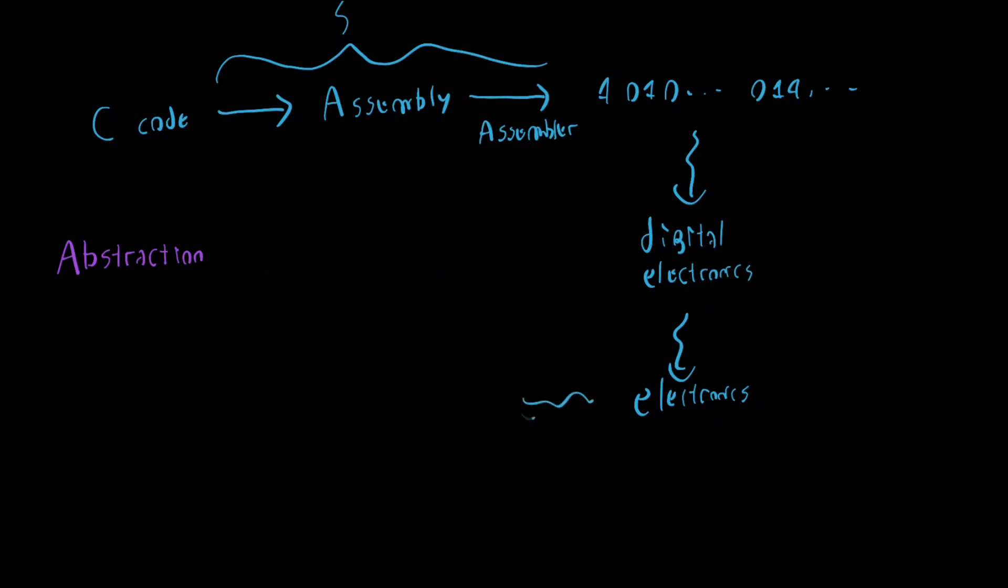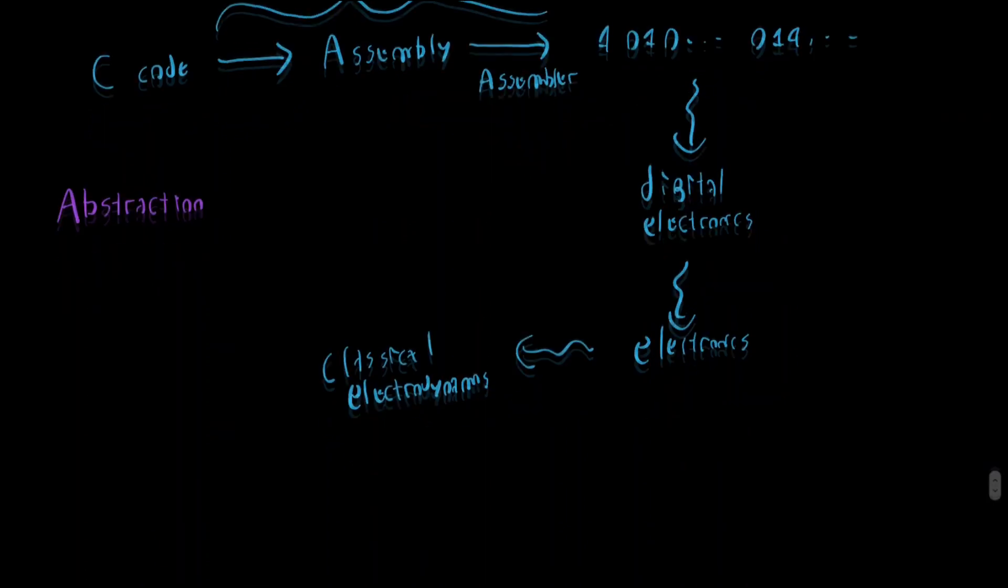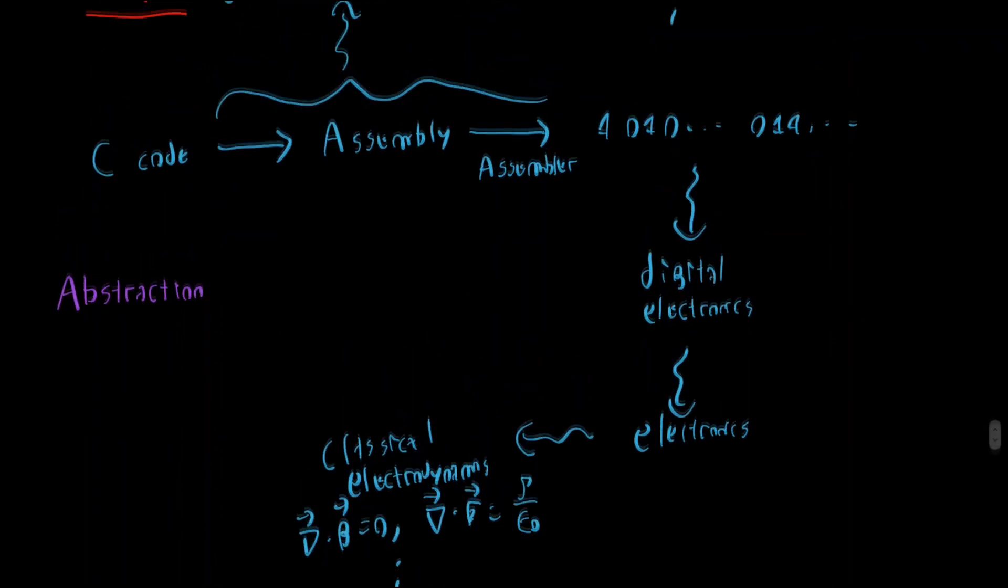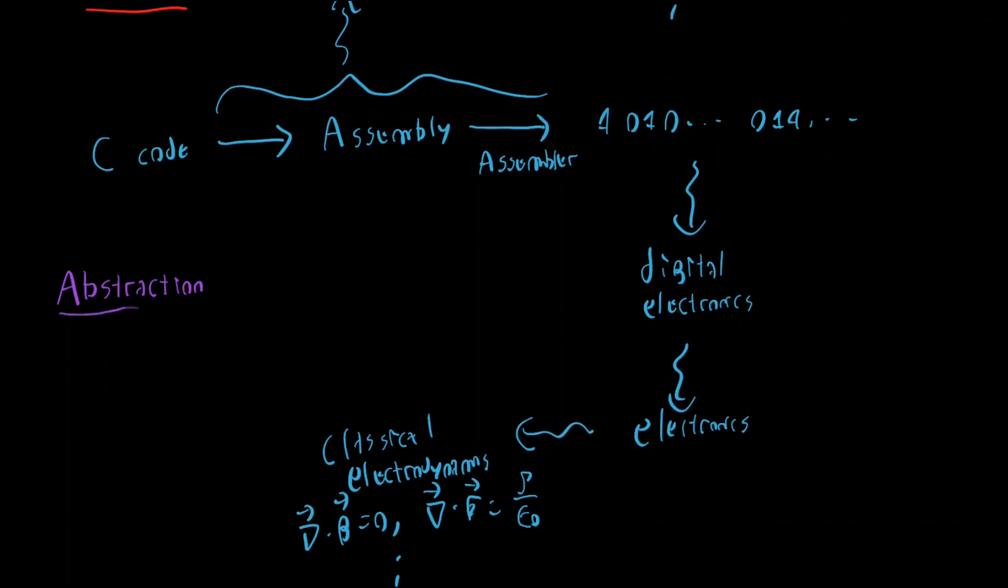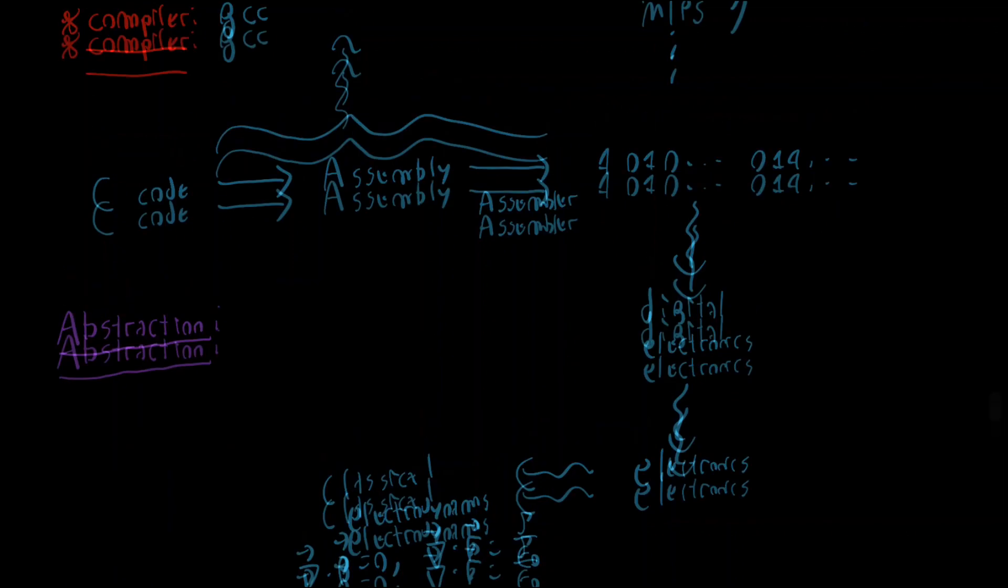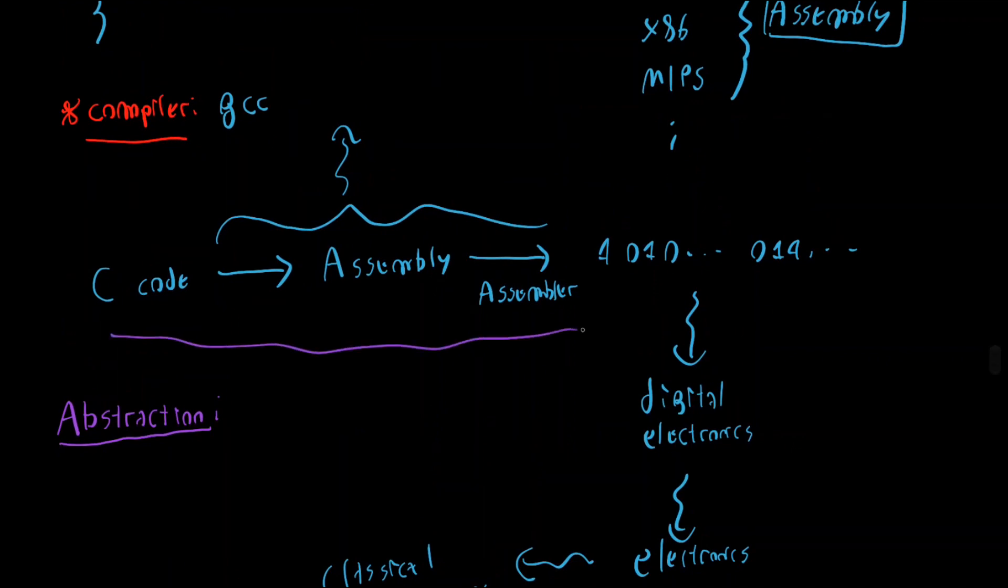But then we would inevitably end up in the field of classical electrodynamics. That would mean that Maxwell's laws and Lorentz's force law, like, all these results and mathematical models. So really, we could technically never stop in our unveiling these layers of abstraction. So let's not go too deep for now. We will be satisfied with this level, we could say, of abstraction that we had in our explanation for now.